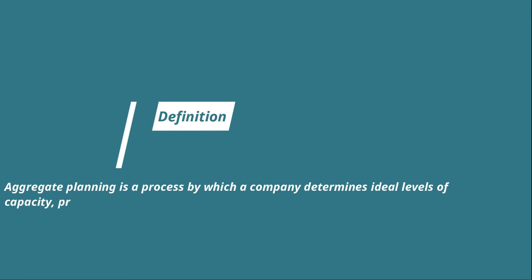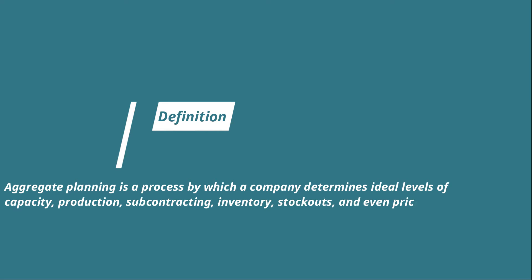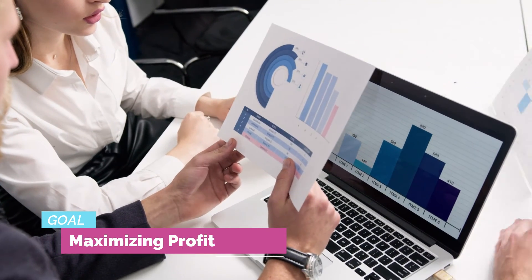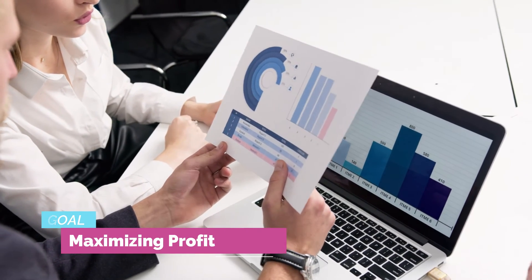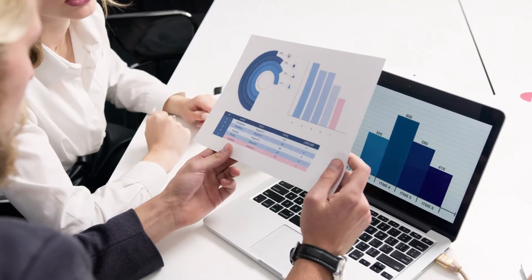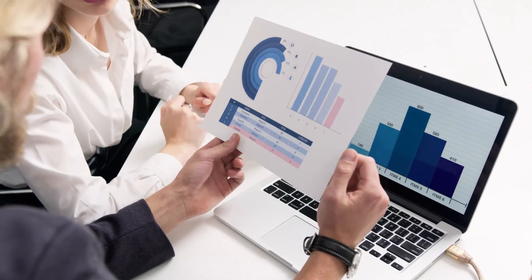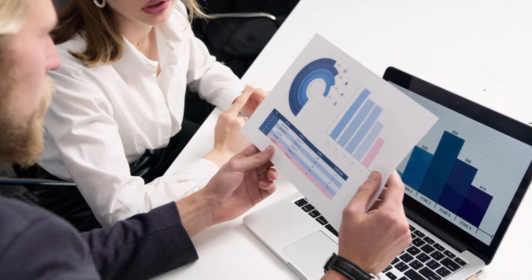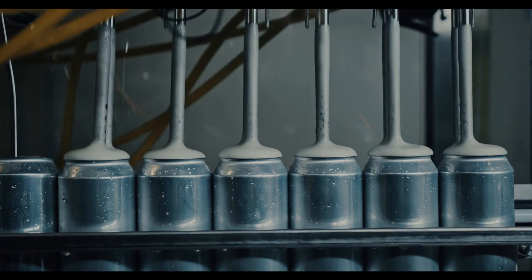By definition, aggregate planning is a process by which a company determines the ideal level of capacity, production, subcontracting, inventory, stockouts, and even pricing over a specific time horizon. The goal of aggregate planning is to satisfy demand while maximizing profit.